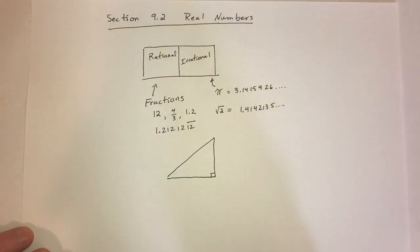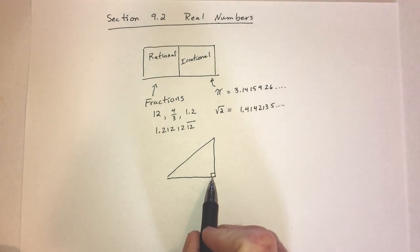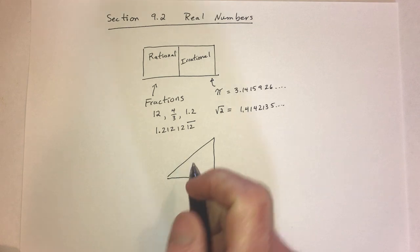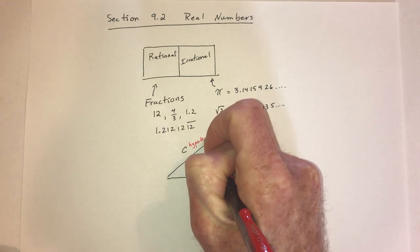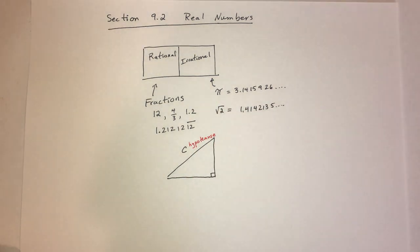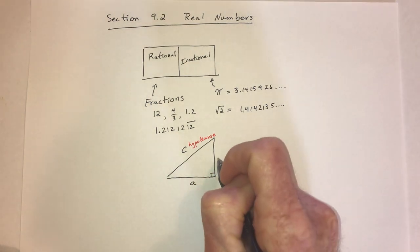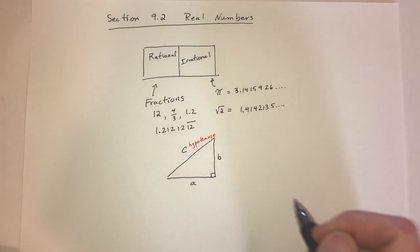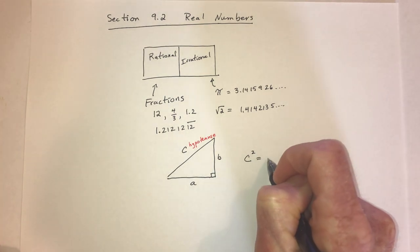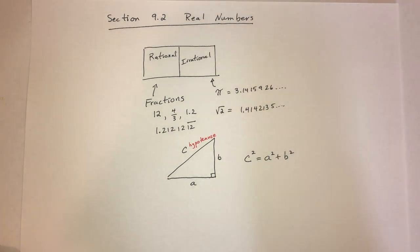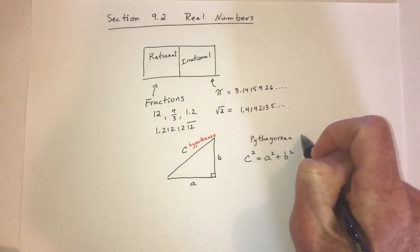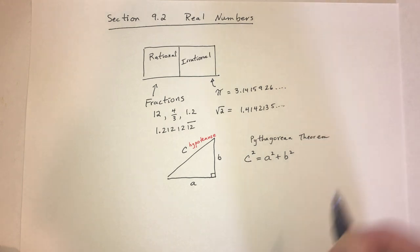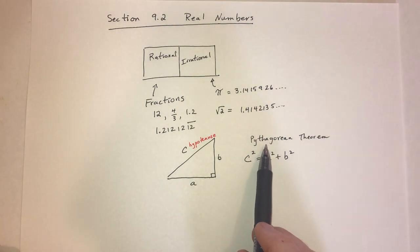Now suppose that you have a right triangle. The 90-degree angle means across from it is the biggest side, called the hypotenuse. The other two sides are called legs, with lengths a and b. There's a beautiful formula: c squared equals a squared plus b squared. This is called the Pythagorean theorem.